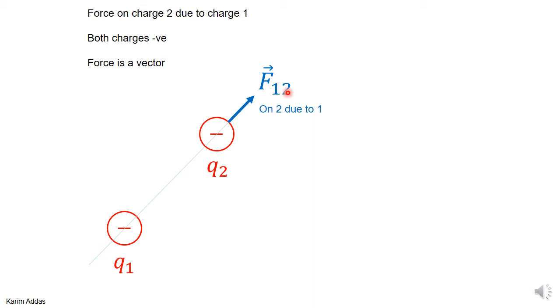When you write F12, it means the force on 2 due to 1. The second index is the charge that you're getting the force on, and the first index is the charge you're getting the force due to.